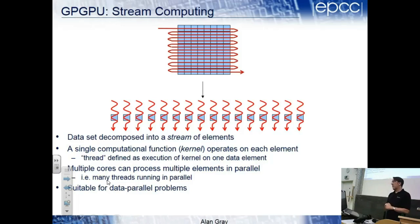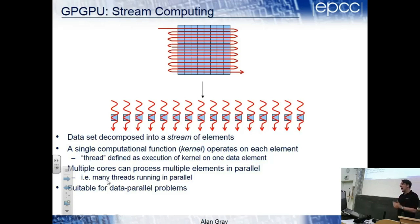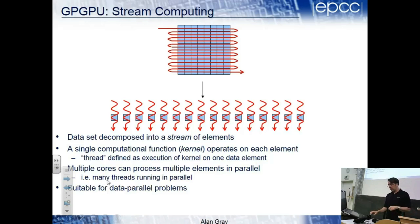GPUs are suitable for data parallel problems - where you're applying the same operation to a large number of elements. That's clearly true of the traffic model: the update rule for a cell was the same for all million or ten million cells. It's also true of many scientific and technical problems, so this model maps well onto scientific and technical computing.